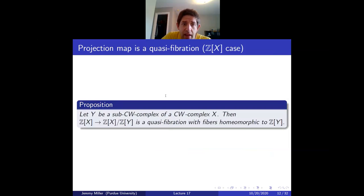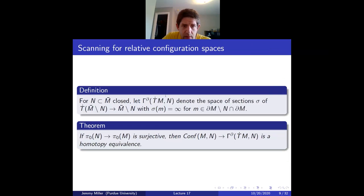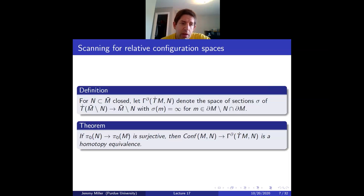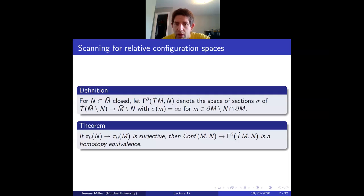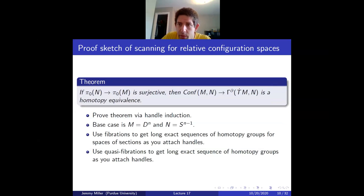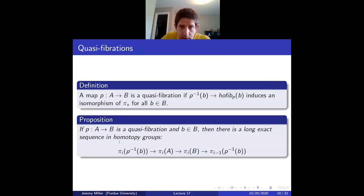That checks the quasi-fibration criteria. This is used to prove the proposition, and then that lets us prove that the scanning map for relative configuration spaces is a homotopy equivalence under the assumption that every connected component of M has part of N in it. Other than needing to worry about this pi_0 condition, the proof is very similar to scanning for free abelian groups.